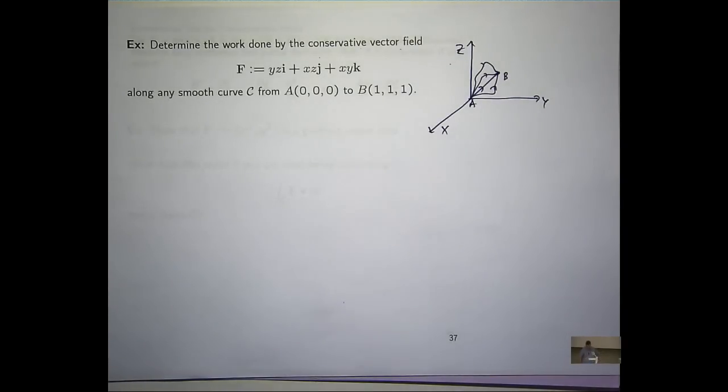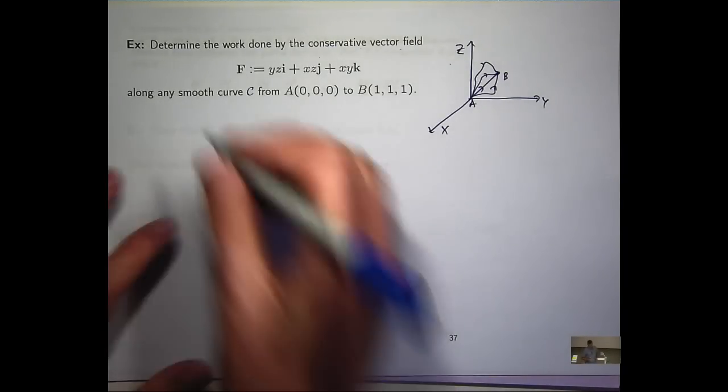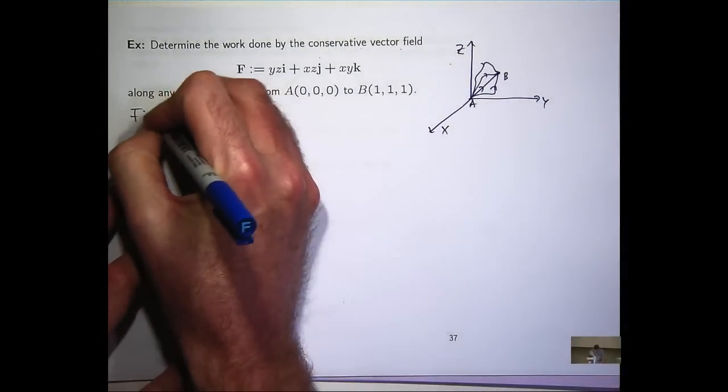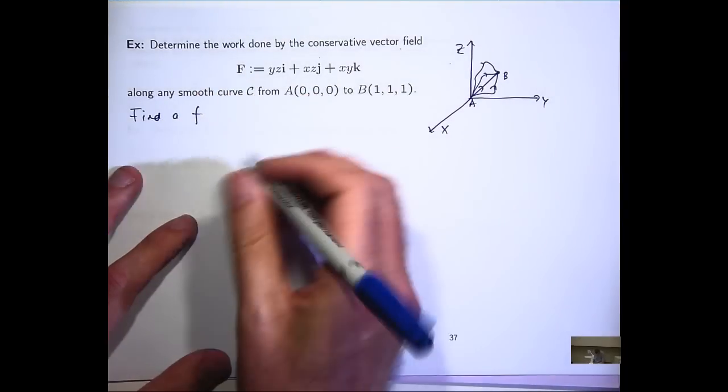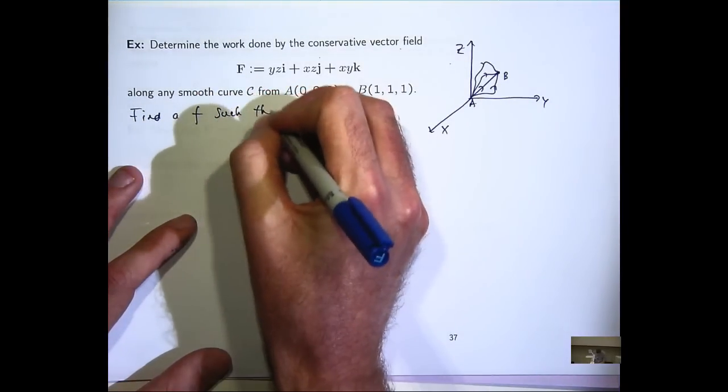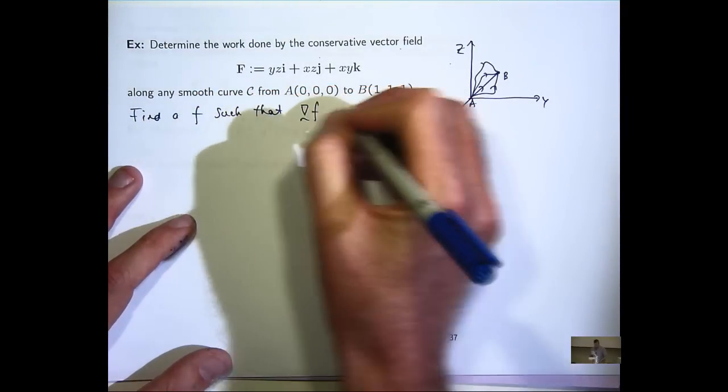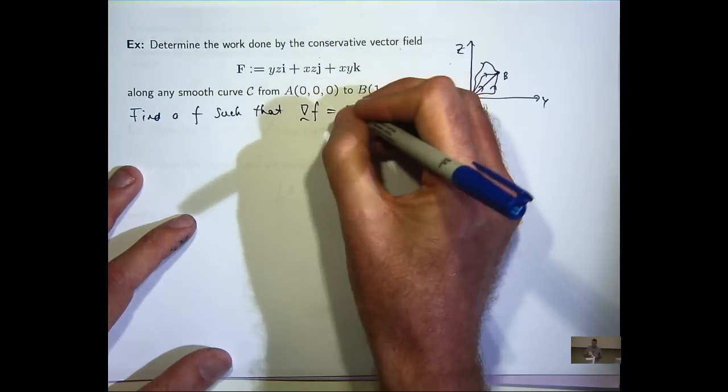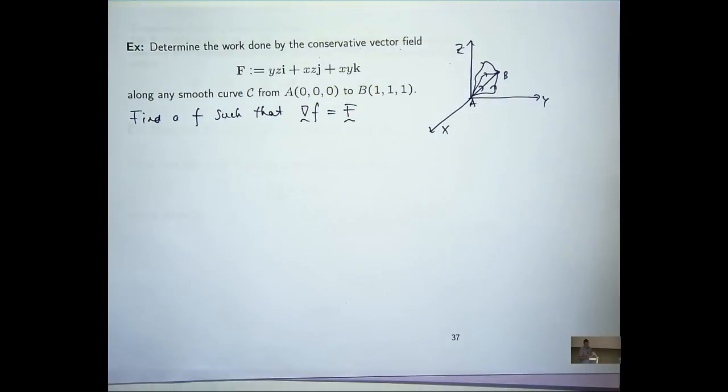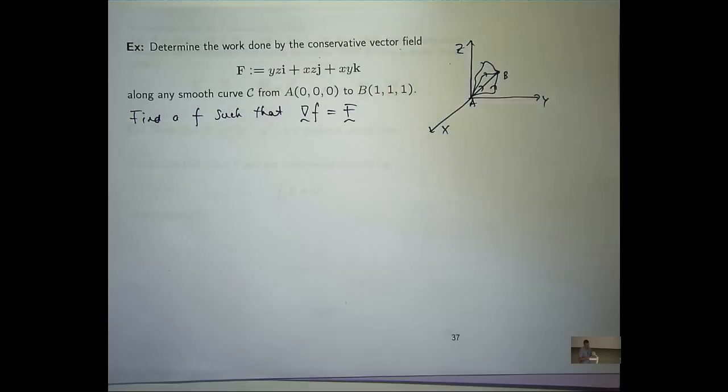So what we would like to do is find a f such that the gradient of this f is this vector field up here. So now this is a challenge that you'll have to face if you get a question like this. You have to somehow produce this function little f.